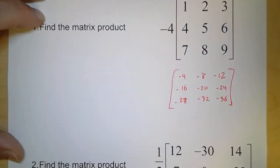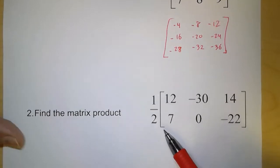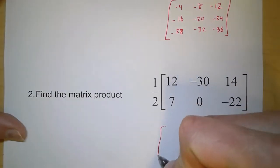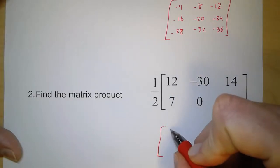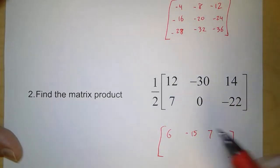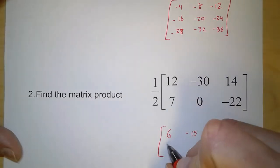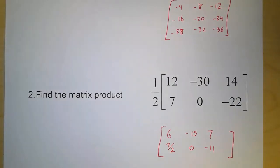So on to the second one, same thing. Here we're multiplying everything by 1 half. So the order is going to stay the same. On the top row, it's going to be 6, negative 15, and 7. Now, 7 times 1 half is not a whole number, so I'm just going to leave it as 7 halves, 0, and negative 11.